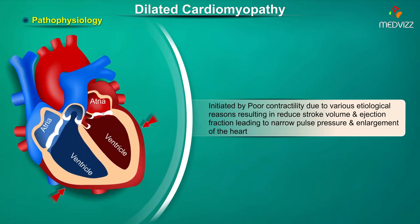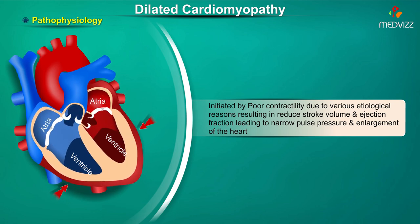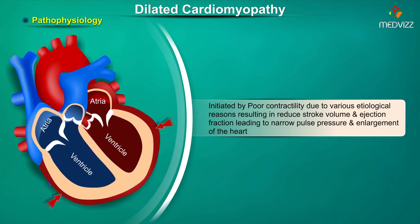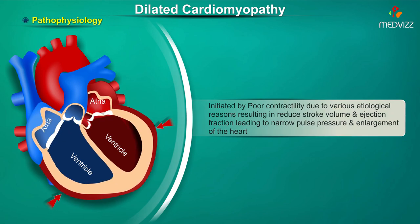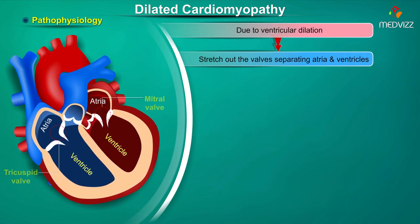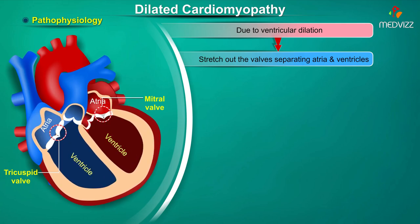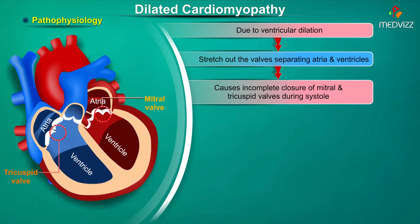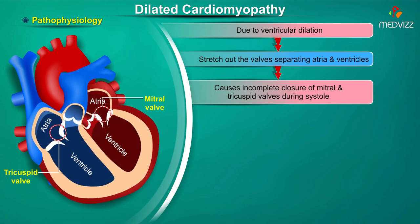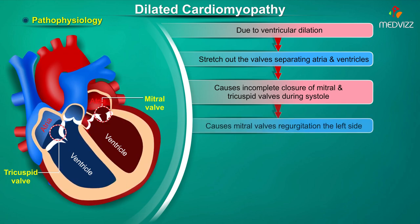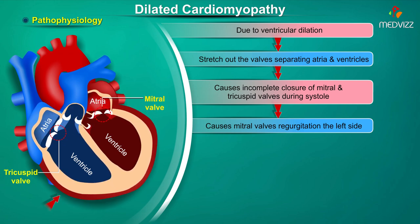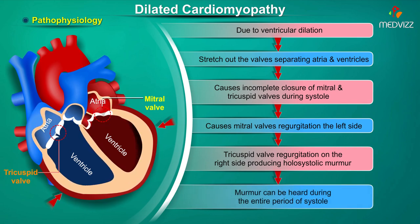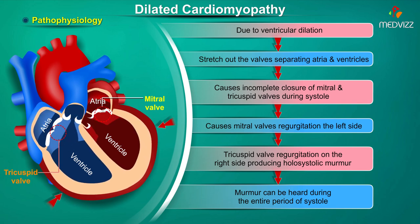The pathophysiology of dilated cardiomyopathy is initiated by poor contractility due to various etiological reasons, resulting in reduced stroke volume and ejection fraction, leading to a narrow pulse pressure and enlargement of the heart. Because of ventricular dilation, the valves separating the atria and ventricles are stretched, causing incomplete closure of the mitral and tricuspid valves during systole. This leads to regurgitation of blood back into the atria — mitral valve regurgitation on the left and tricuspid regurgitation on the right — producing holosystolic murmurs heard during the entire period of cardiac systole.